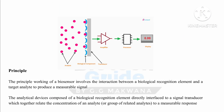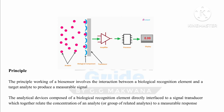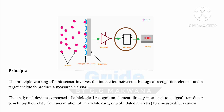Before we start, let's take a brief overview about the principle and mechanism of biosensor. The principle of biosensor involves the interaction between a biological recognition element and a target analyte to produce a measurable signal. That measurable signal is converted into a detectable signal via a transducer. After that, an amplifier amplifies this signal, and then the signal is measured, quantified, and detected via a processor. Finally, the result is given in the form of a number.